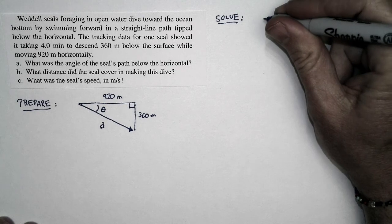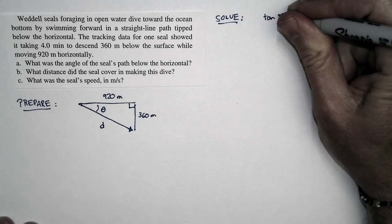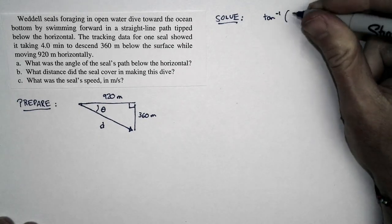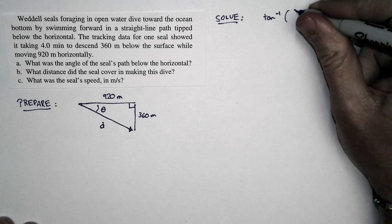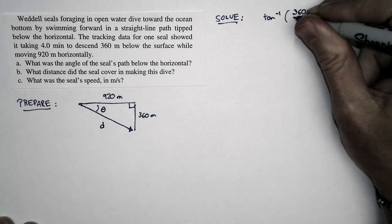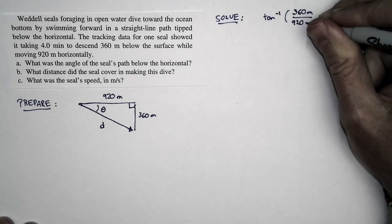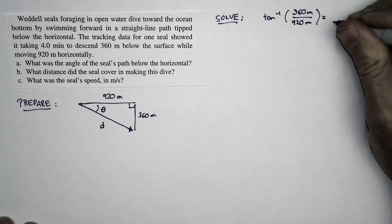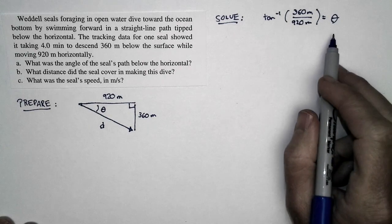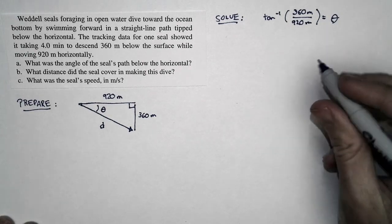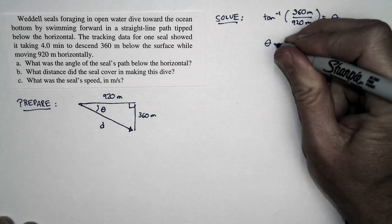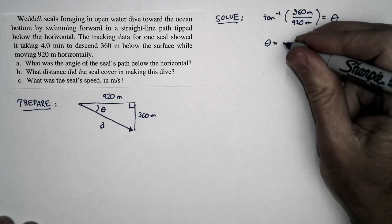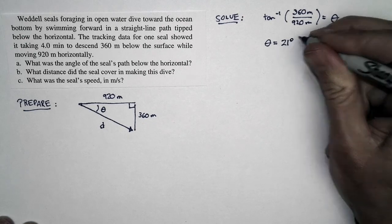So the inverse tangent of the opposite over the adjacent, 360 meters over 920 meters, is equal to theta. That's going to give me what theta is equal to. That's one of our basic trig relationships. So if we compute what we get for theta, it's 21 degrees.